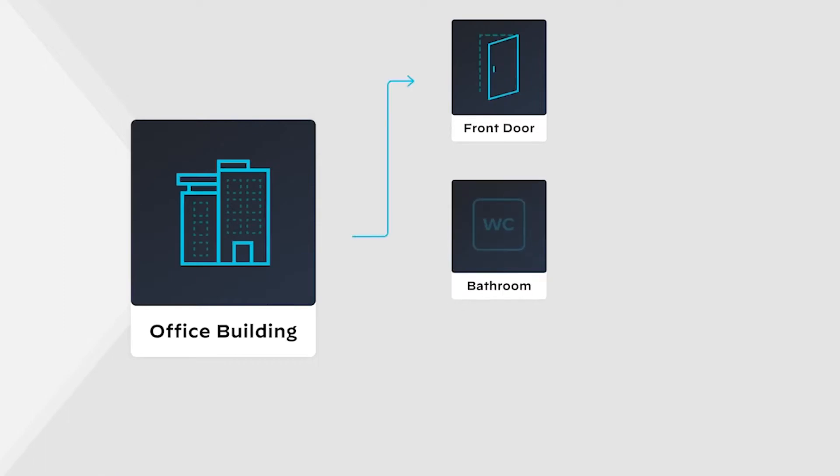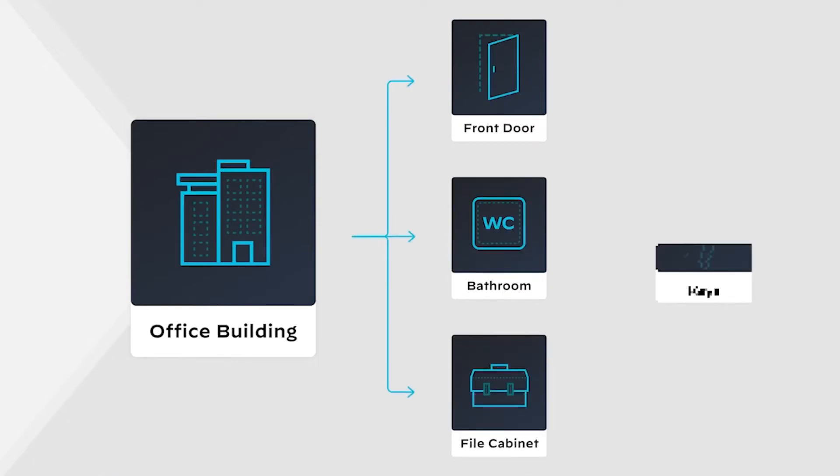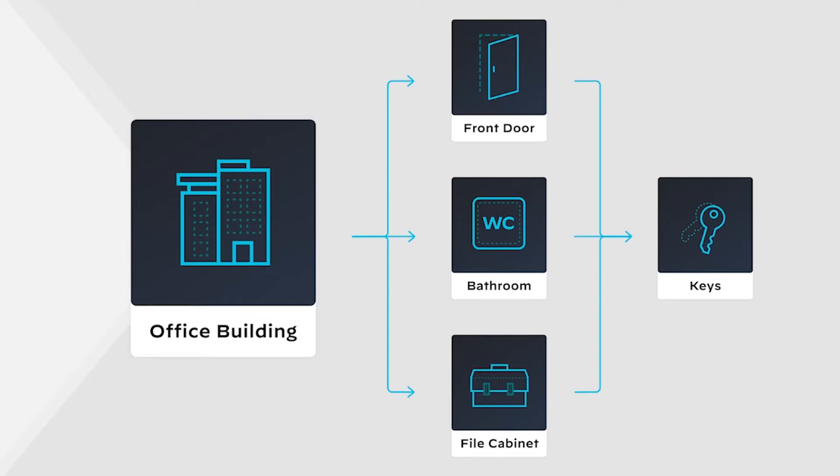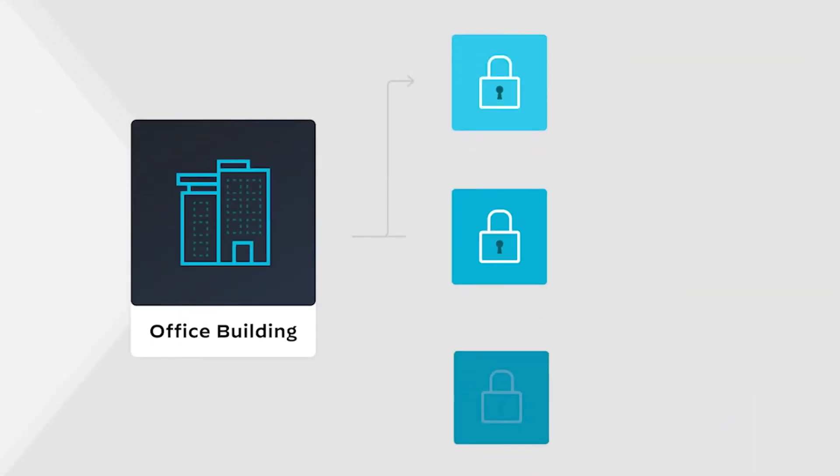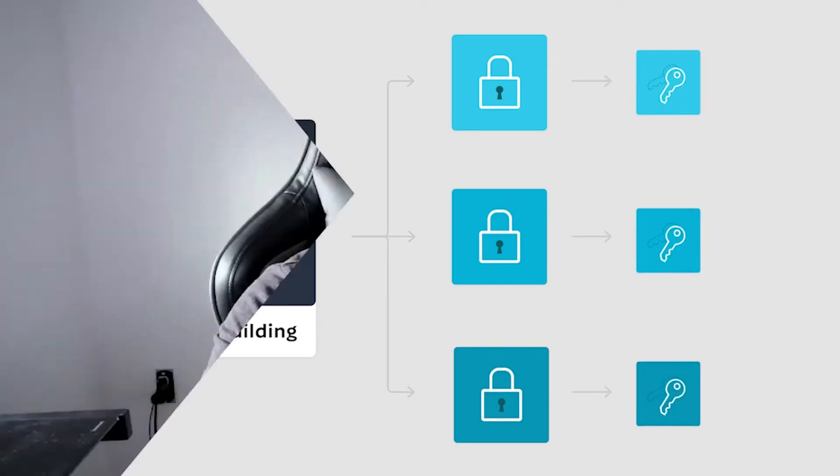Now imagine that you're in charge of managing all the keys for an office building — everything from the front door to the bathrooms, all the way down to individual filing cabinets. Each person that comes into the building needs a set of keys to get in the door, get to their office, do their work, and so on. However, each floor of the building has a different type of lock, and therefore a different style of keys. Now imagine if someone comes to you and says, 'I need a key card.' You have to define what they mean by 'key' and figure out what floors they actually need access to. Outside of that, you need to know how long they need their key for and what other keys they already have in their possession.